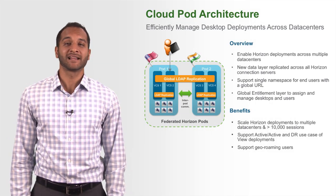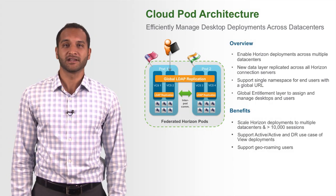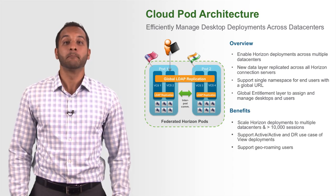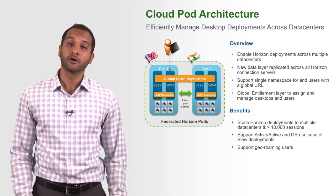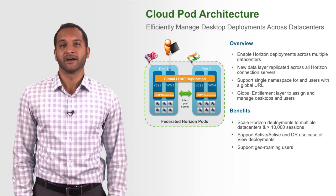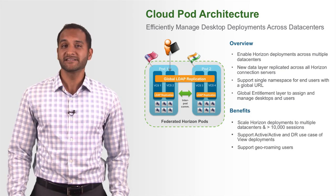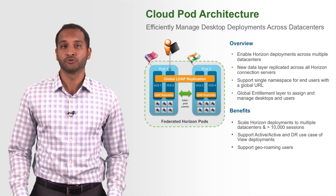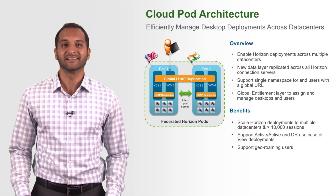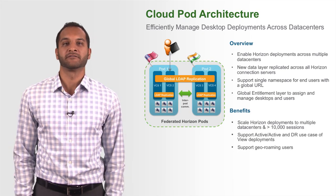First, let's talk about the Cloud Pod architecture. This architecture allows you to scale your Horizon deployments across multiple data centers and over 10,000 sessions, something that was a previous limitation of the product. This scalability allows for geo-roaming users, as well as active-active and DR use cases that were also previously unavailable.